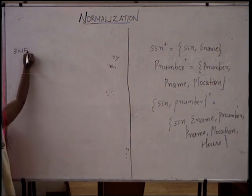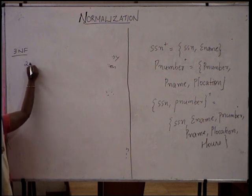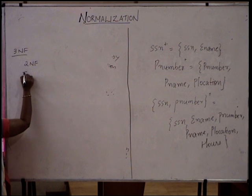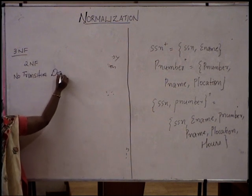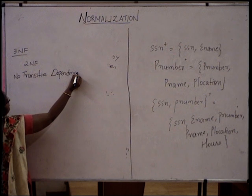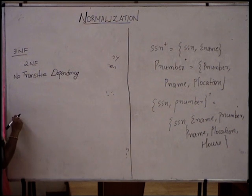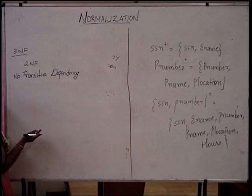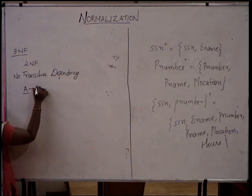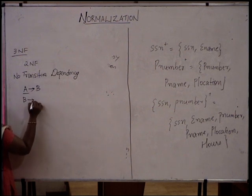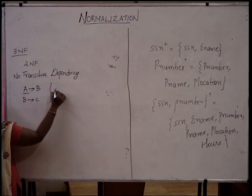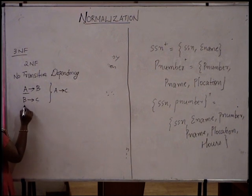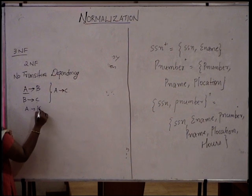Next is the third normal form. Third normal form says the table should already be in second normal form, plus there is no transitive dependency from a key attribute towards a non-key attribute through a non-key attribute. For example, A is a key attribute, A implies B, B implies C — that is called transitive dependency, provided A is a key attribute and B and C are non-key attributes.